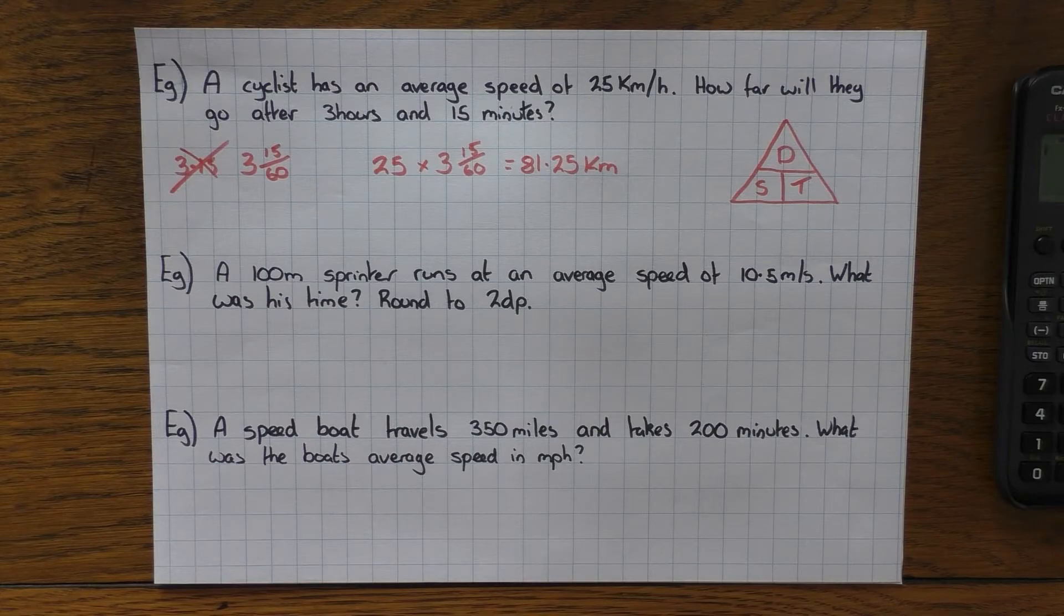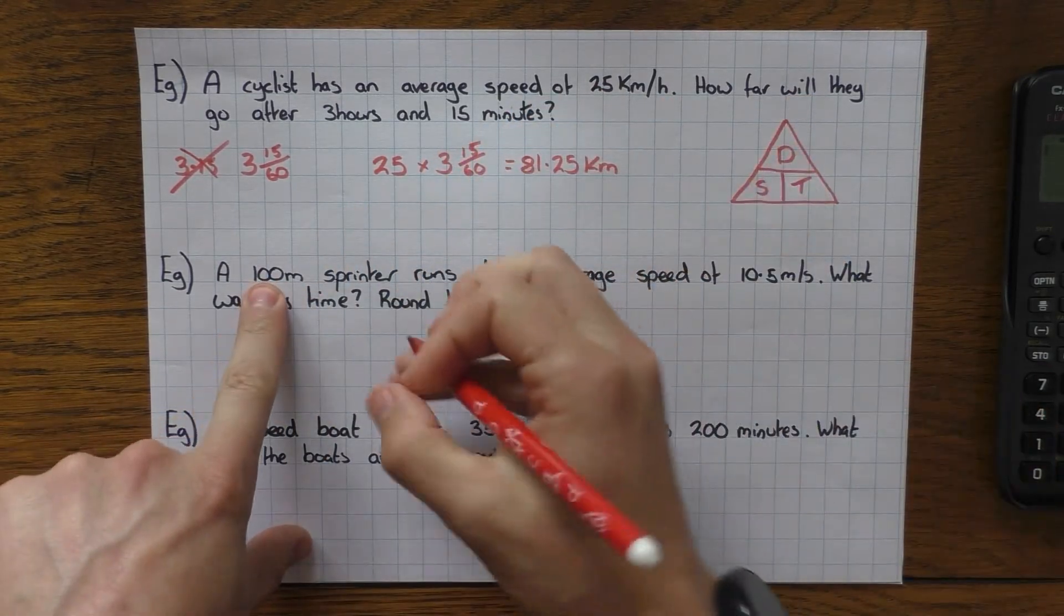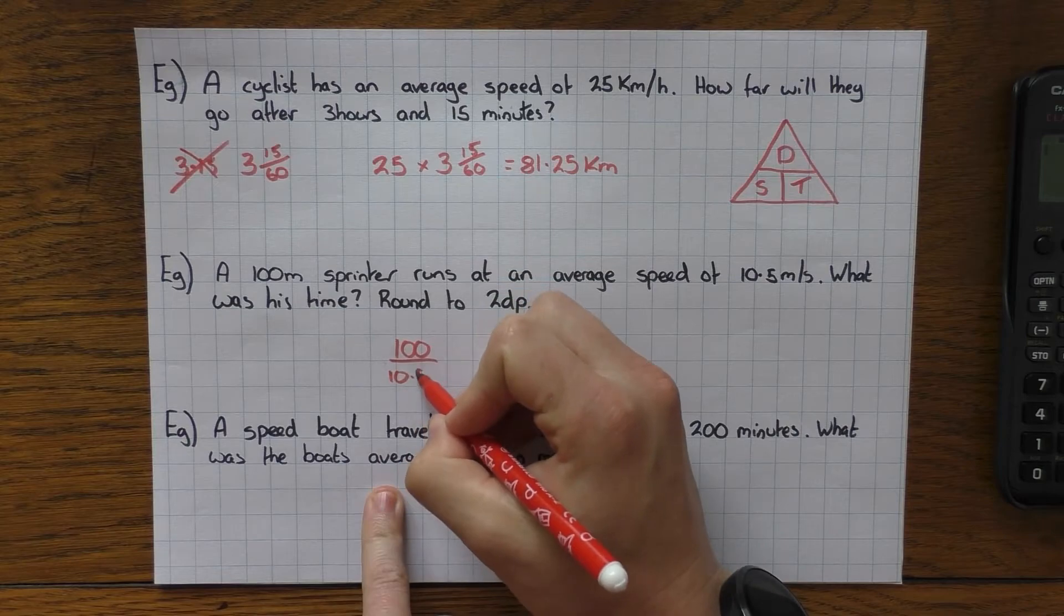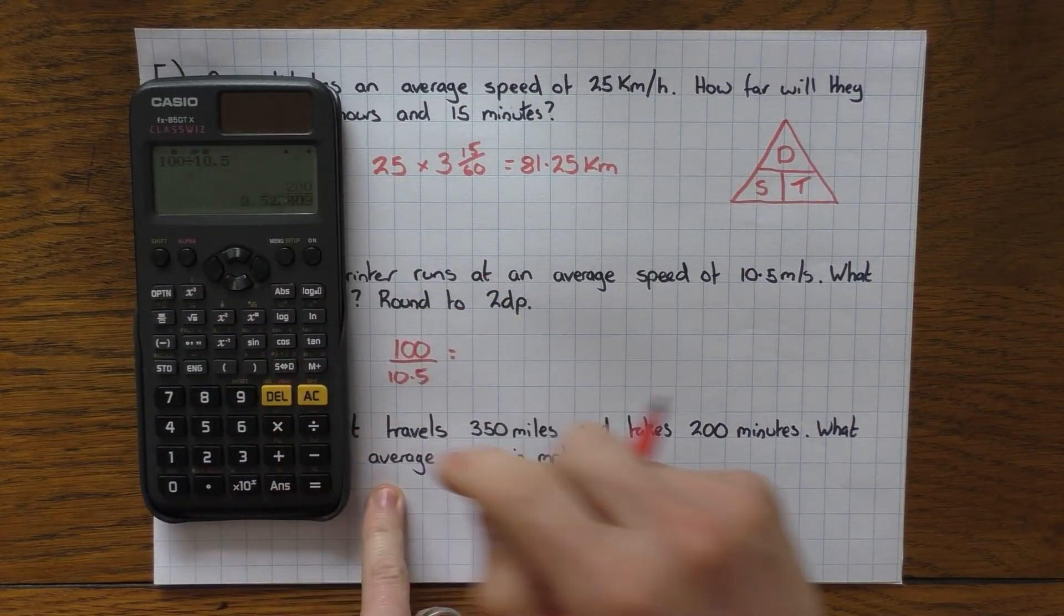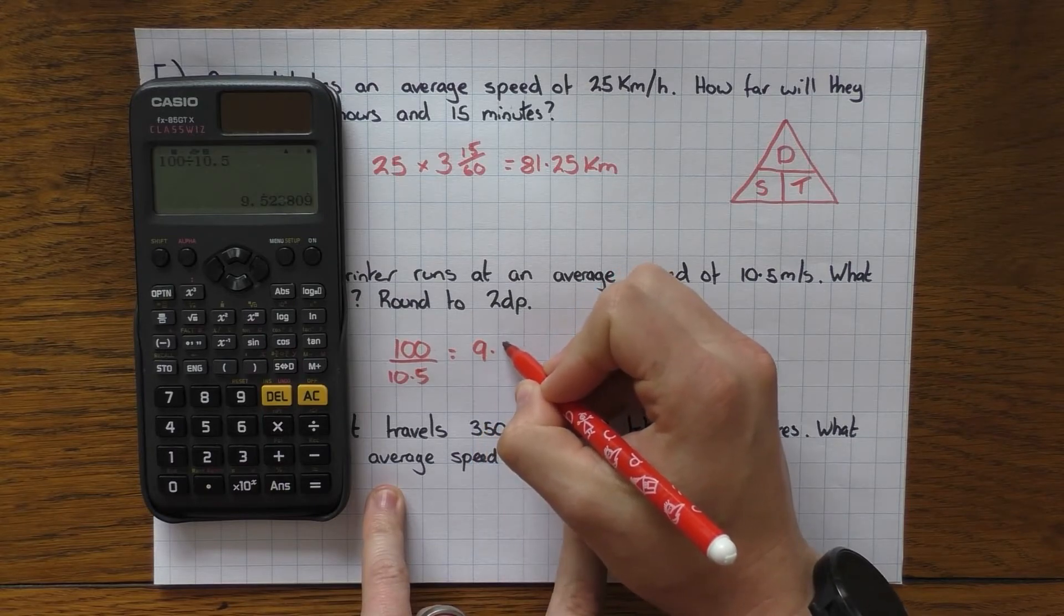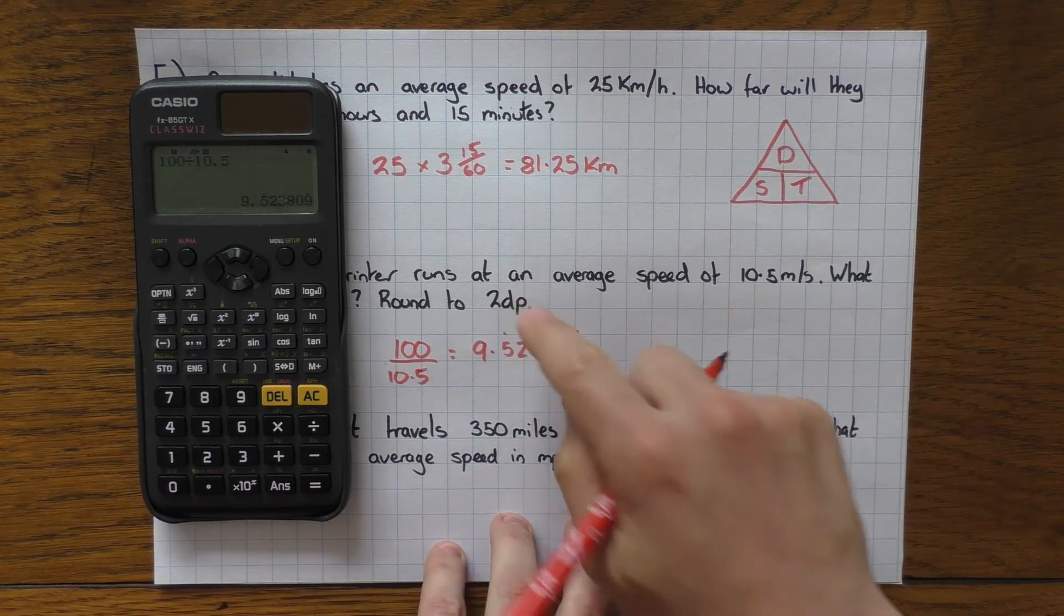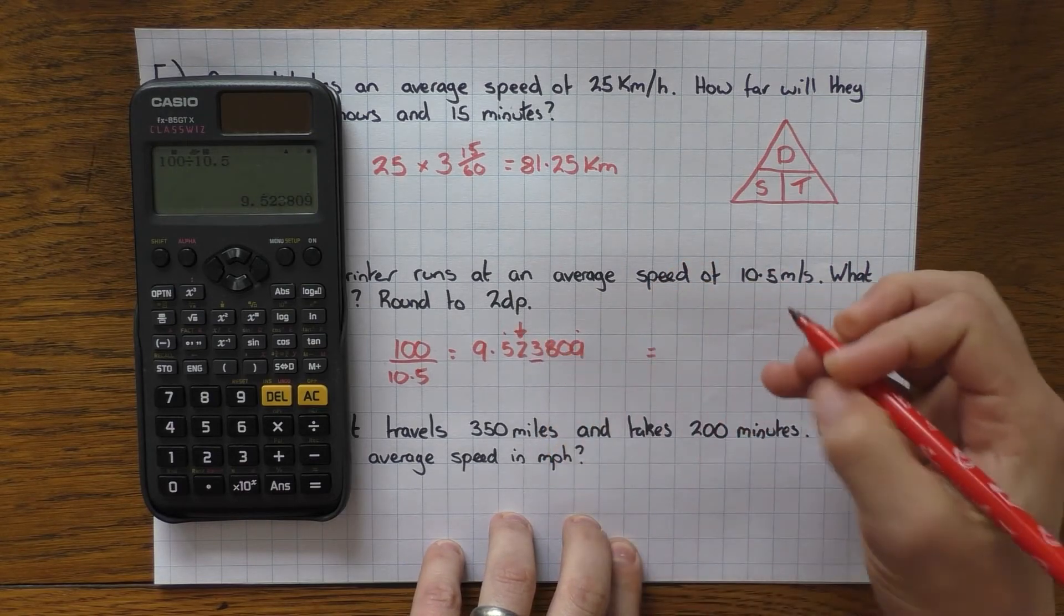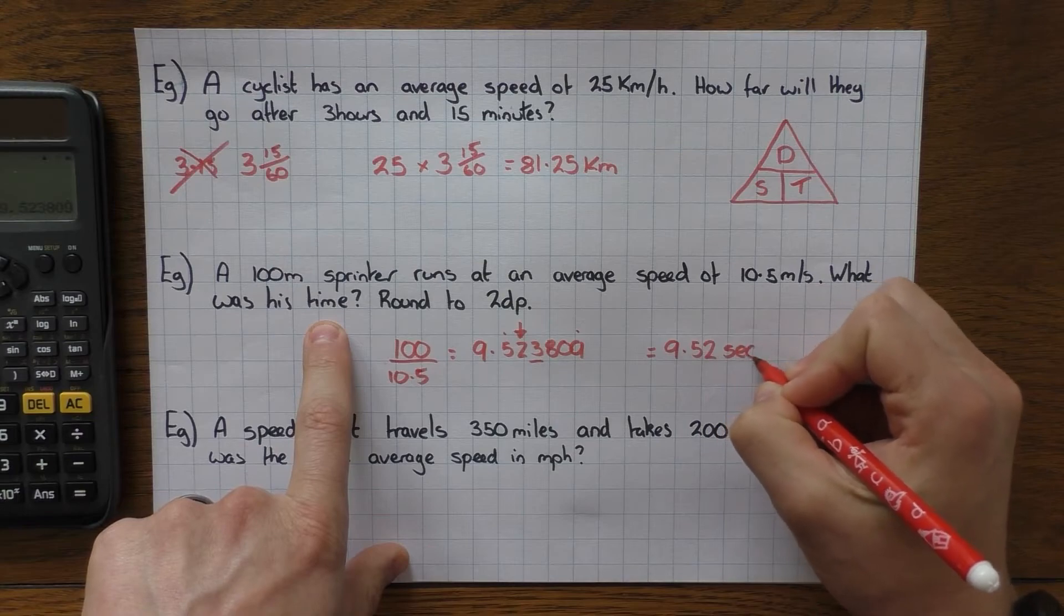Next one, a 100 meter sprinter runs at an average speed of 10.5 meters per second. What was his time? Round it to two decimal places. So I'm after time. So I cover up T, which means I'm doing the distance, which was 100 meters, and I need to divide that by the speed, which is 10.5. Definitely a calculator job. This one, 100 divided by 10.5. Again, it gives it as a fraction. And two decimal places. So we've got 9.523809. And that's recurring. So I would definitely write out the full amount. But if it says round it to two decimal places, round it. And two decimal places puts us there. The three tells us to round down. So that's 9.52. And it was time in seconds. So seconds.